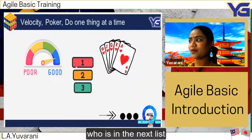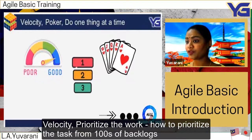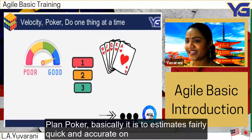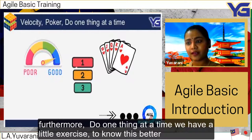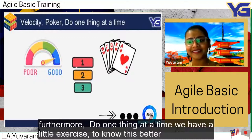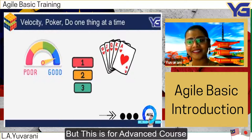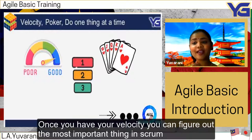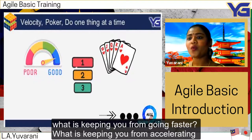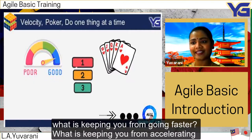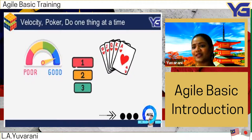Next is velocity — how to prioritize tasks from hundreds of backlogs. We use planning poker, which is a method to estimate quickly and accurately how much effort, time, and money a project will take. There's also the principle of doing one thing at a time. Once you have your velocity, you can figure out the most important thing in scrum: what is keeping you from going faster in completing your work? This will be continued in our advanced course.